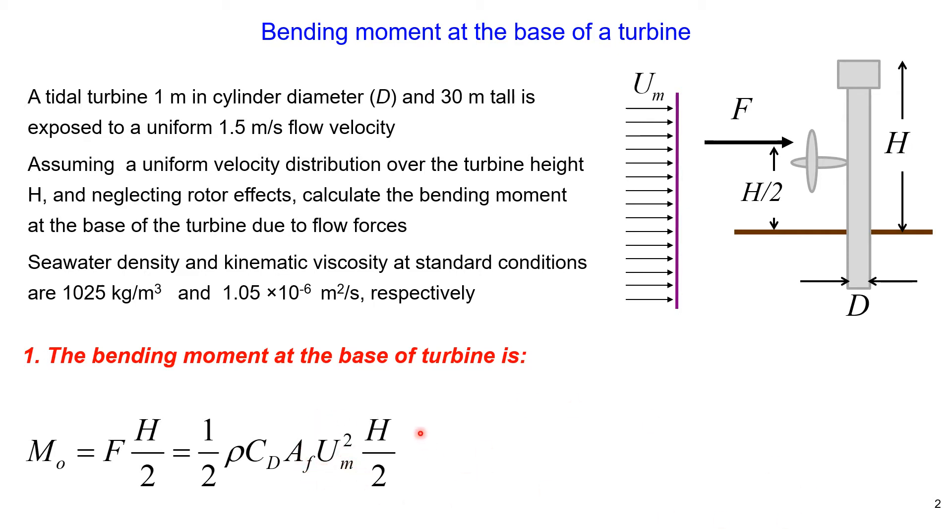We can express the bending moment as shown on this slide. The frontal reference area is estimated as the turbine's cylinder frontal area, or the product of diameter multiplied by turbine height. Therefore, the bending moment equals 0.5 multiplied by density, multiplied by drag coefficient, multiplied by flow velocity in power 2, and multiplied by diameter, multiplied by height of the turbine in power 2, and divided by 2.